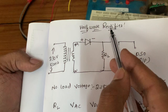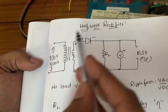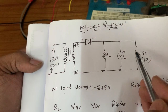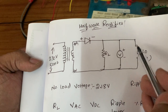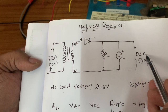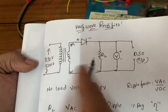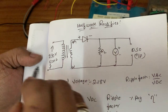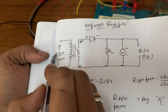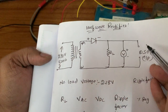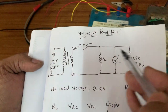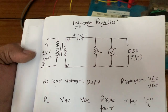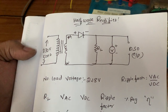First of all, a rectifier is a device which converts AC to pulsating DC. We will see the pulsating DC in the DSO — Digital Storage Oscilloscope. By connecting this circuit, we will give the input supply and we will get the output supply. Input we are giving is AC; output we are getting is pulsating DC.